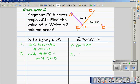And that's the definition of bisector, more specifically, angle bisector.